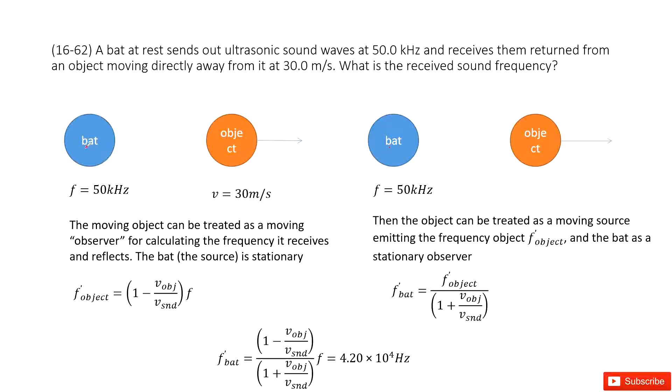First, we can consider it as a source. This is a stationary source, and then it just produces the sound waves. And then the object can be considered as a moving observer. This moving observer moves away from the source.